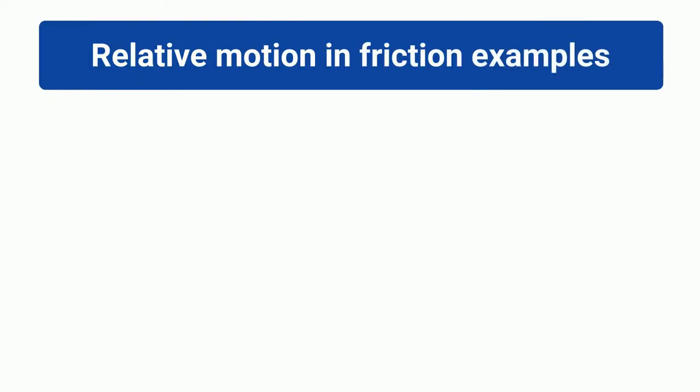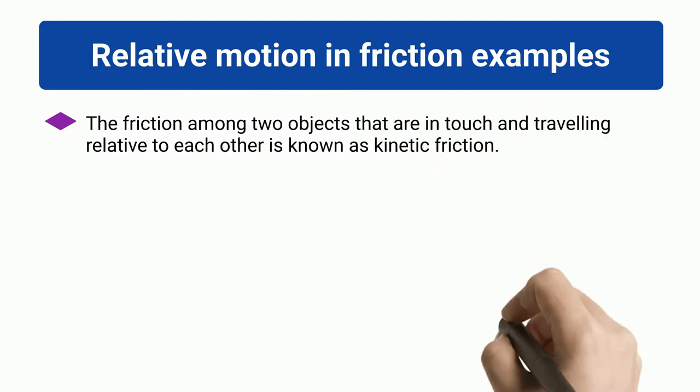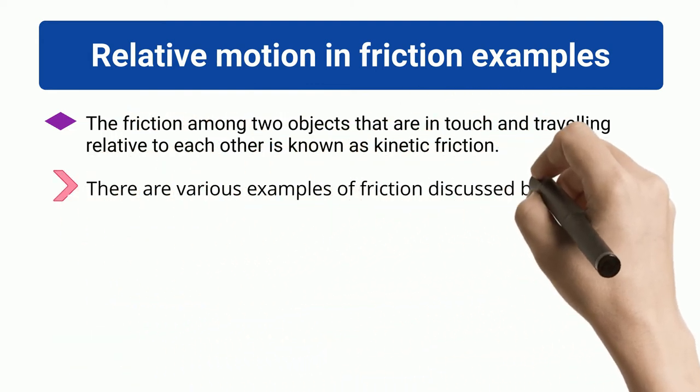Relative motion in friction examples. The friction among two objects that are in touch and traveling relative to each other is known as kinetic friction. There are various examples of friction discussed below.